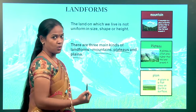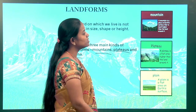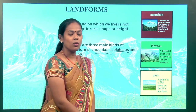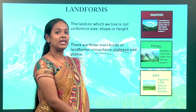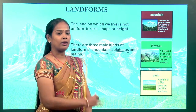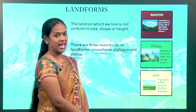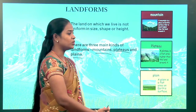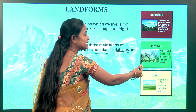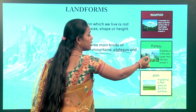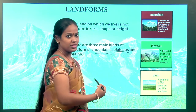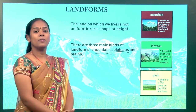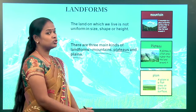What are mountains? A mountain is a place on earth's surface that is much higher than the land around it. What is a plateau? A plateau is a flat area higher than the land around it. Coming to plains — plains are flat areas on the earth's surface. We grow crops on plains. This is the introduction of the lesson.